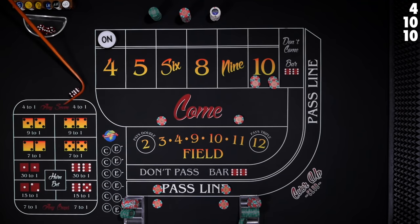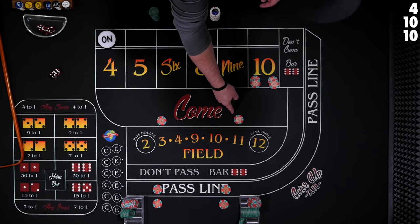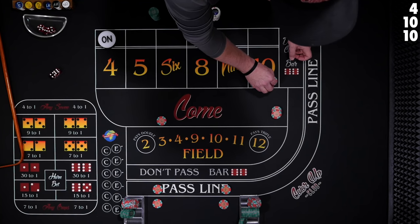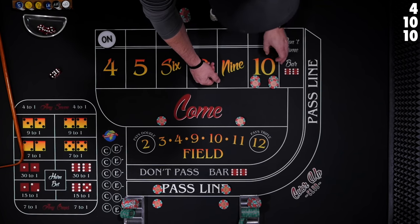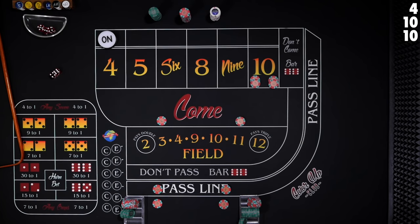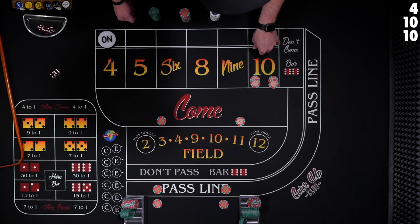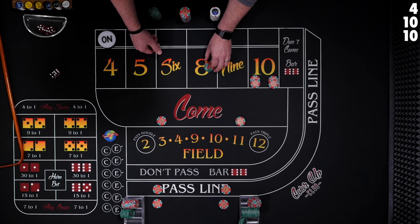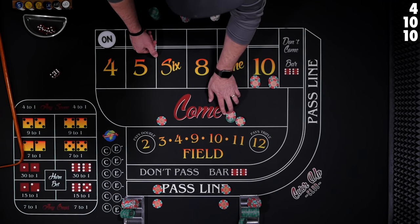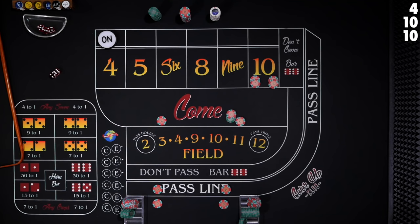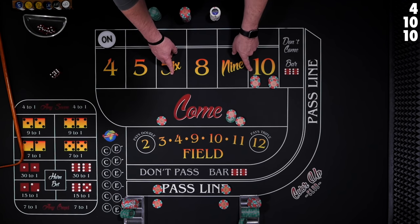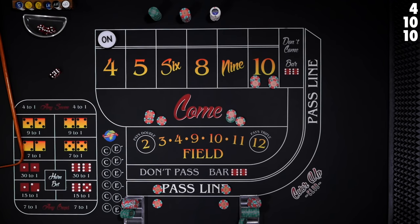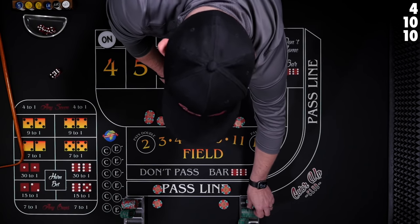Ten again. When your come bet is the same as the winning number, dealers will just calculate the winnings for you. Here we would win $20 in odds and $10 for the flat bet, so we win $30. They'll take $30 and pay you next to your come bet and say you're off and on for $30. This player is going to win $10 for the odds and $5 for the flat, so off and on for $15. You can just take that money and rack it up.